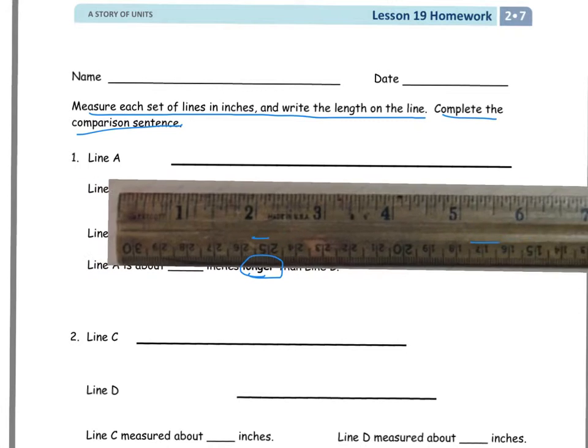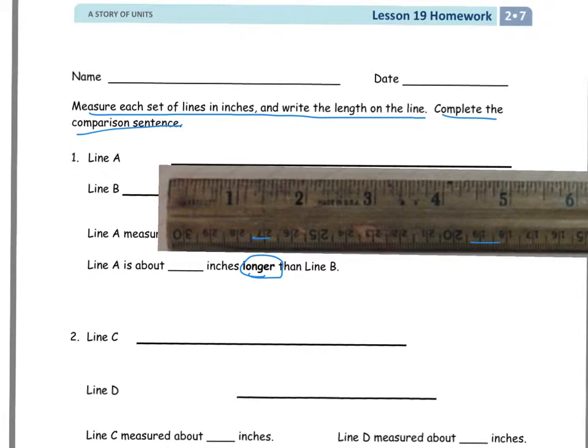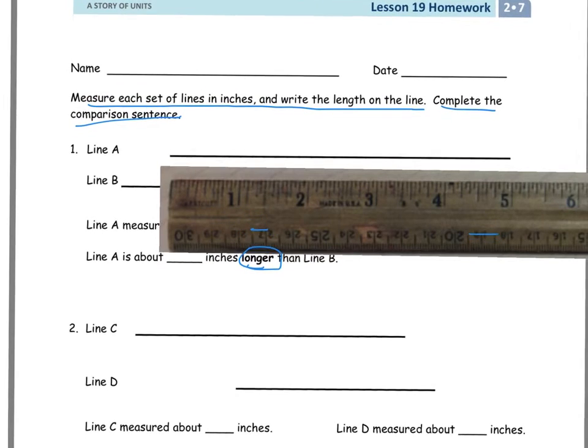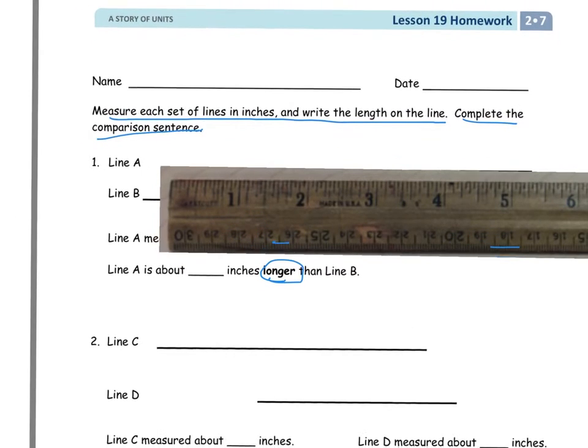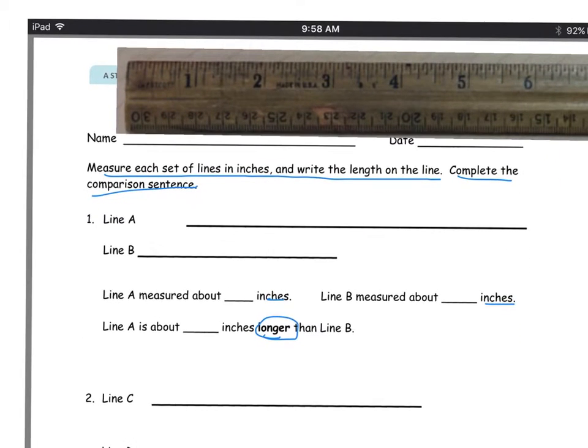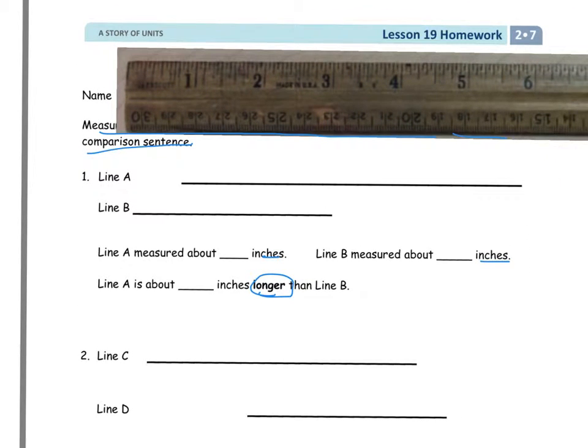The first thing I want to do is bring up my ruler and measure line A. I'm trying to line this up the best I can with the ruler, and I can see that it's about 5 inches. I'll pull my ruler off to the side and write 5 inches.